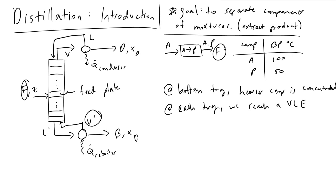The take-home message for distillation columns is that separation revolves almost entirely around the difference in boiling points between species entering the column from a reactor. With this in mind, vapor phase V' sent back up the column will enter another plate, where we reach vapor-liquid equilibrium again.